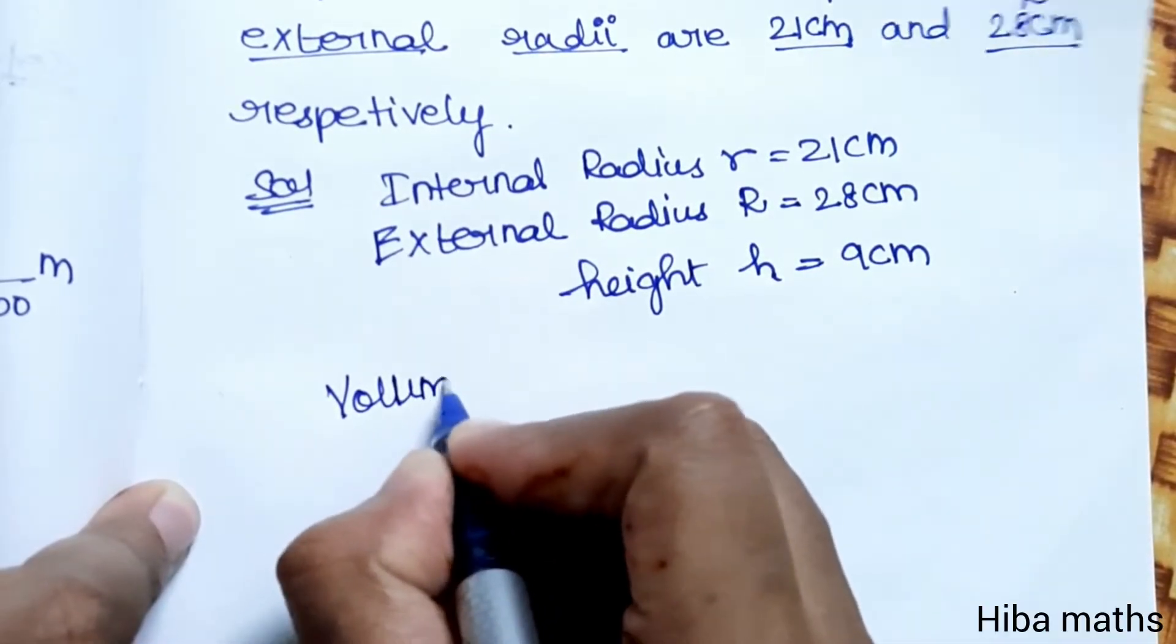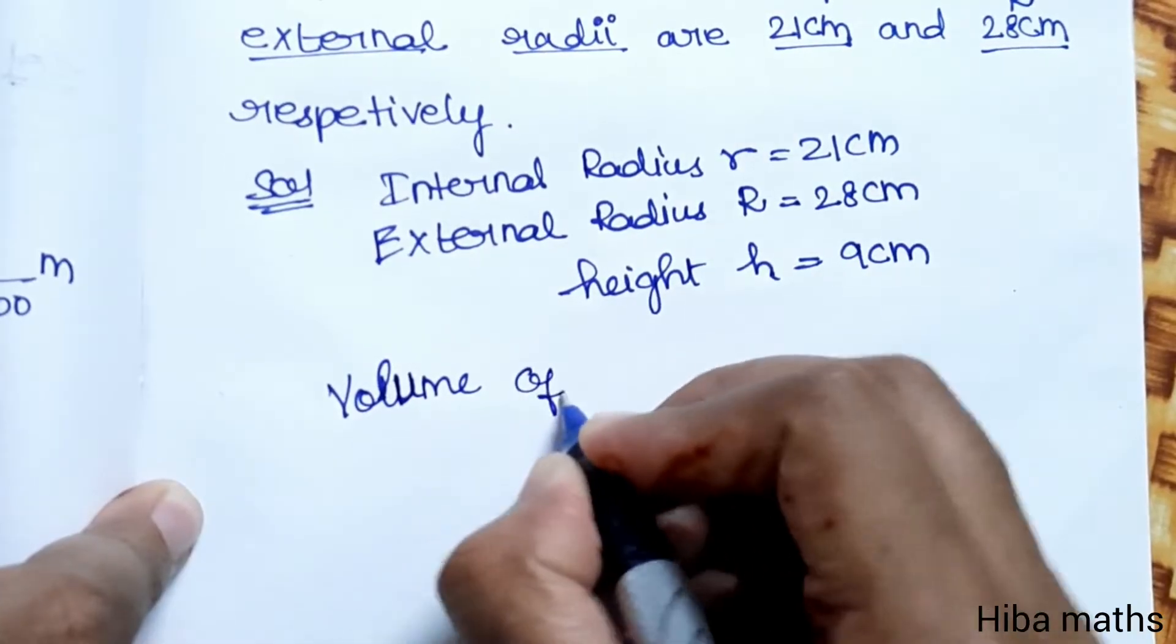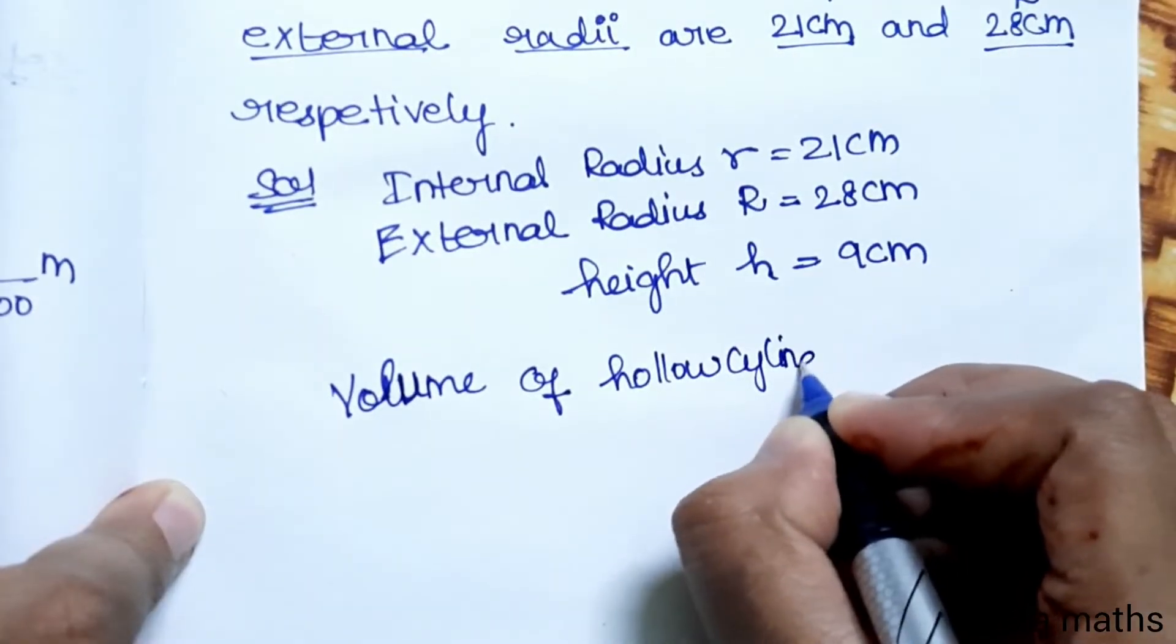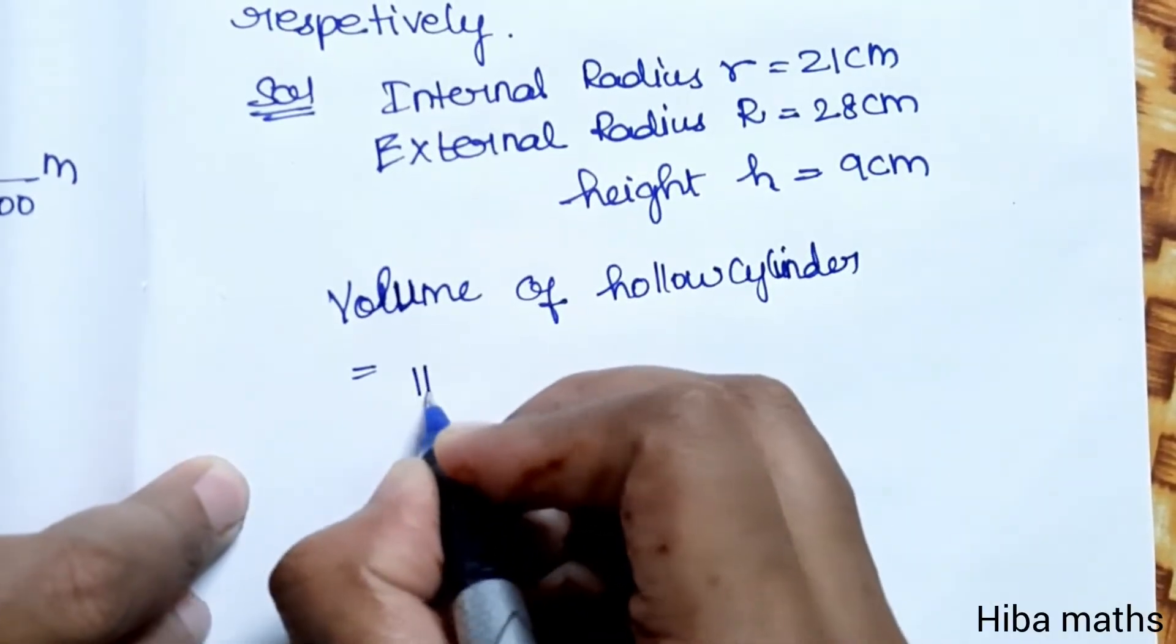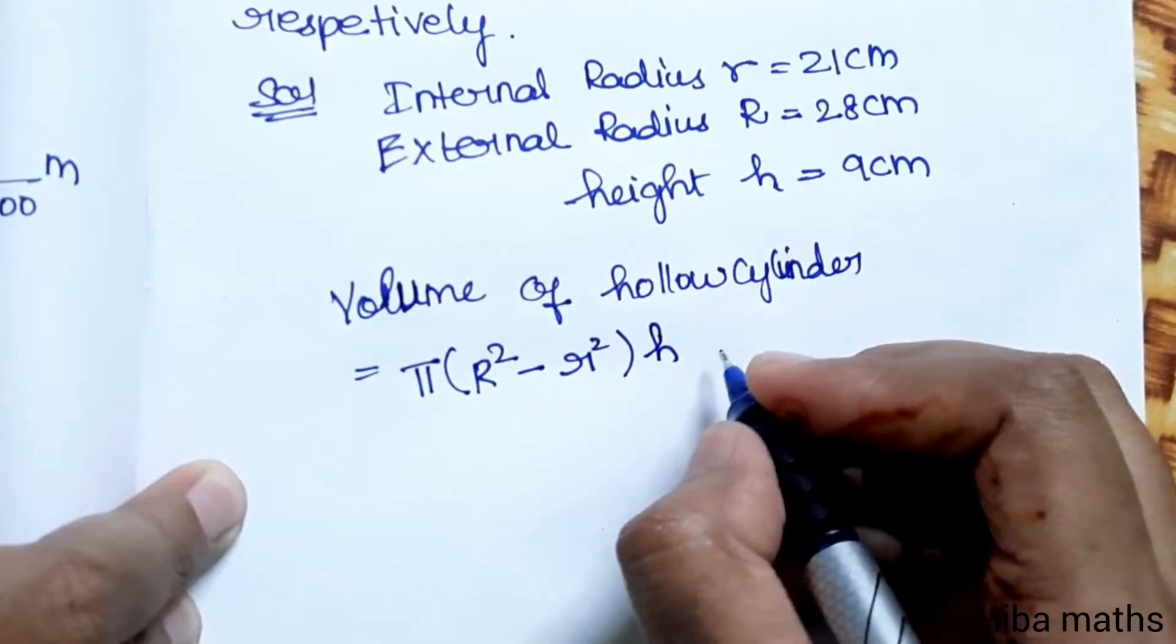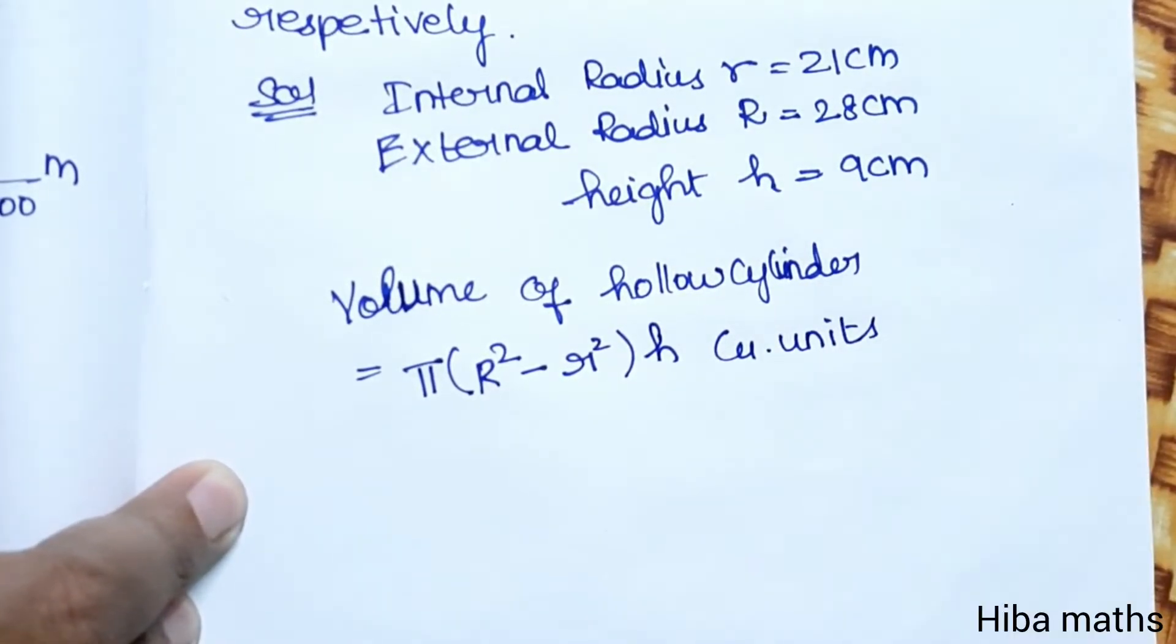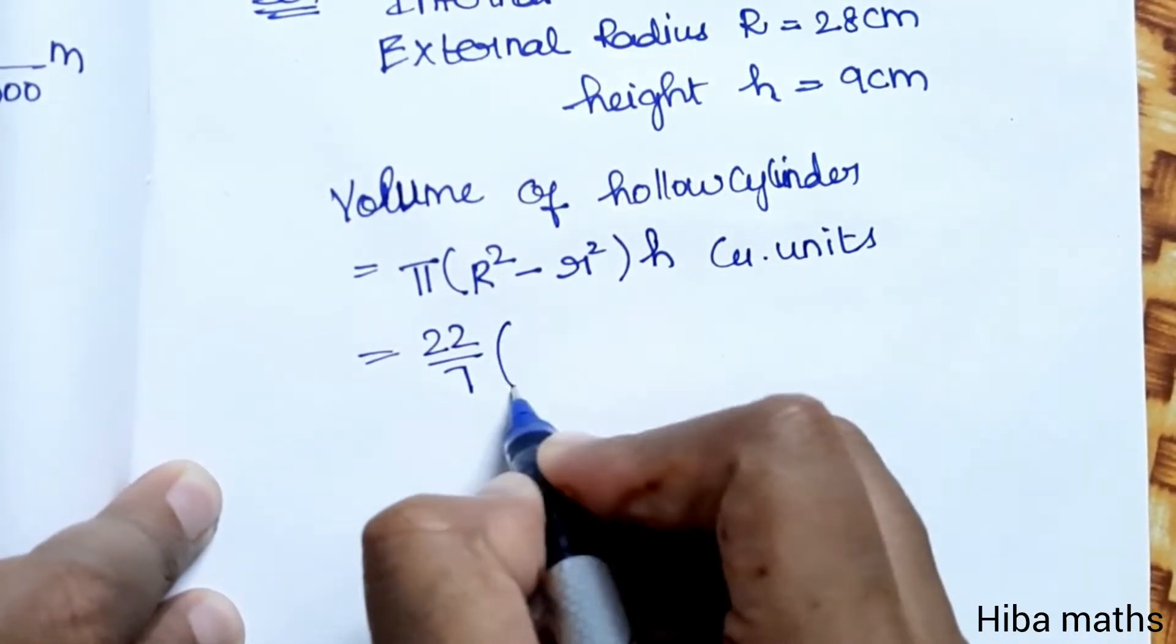Volume of hollow cylinder equals π(R² - r²)h cubic units. Now substituting the values with π as 22/7: